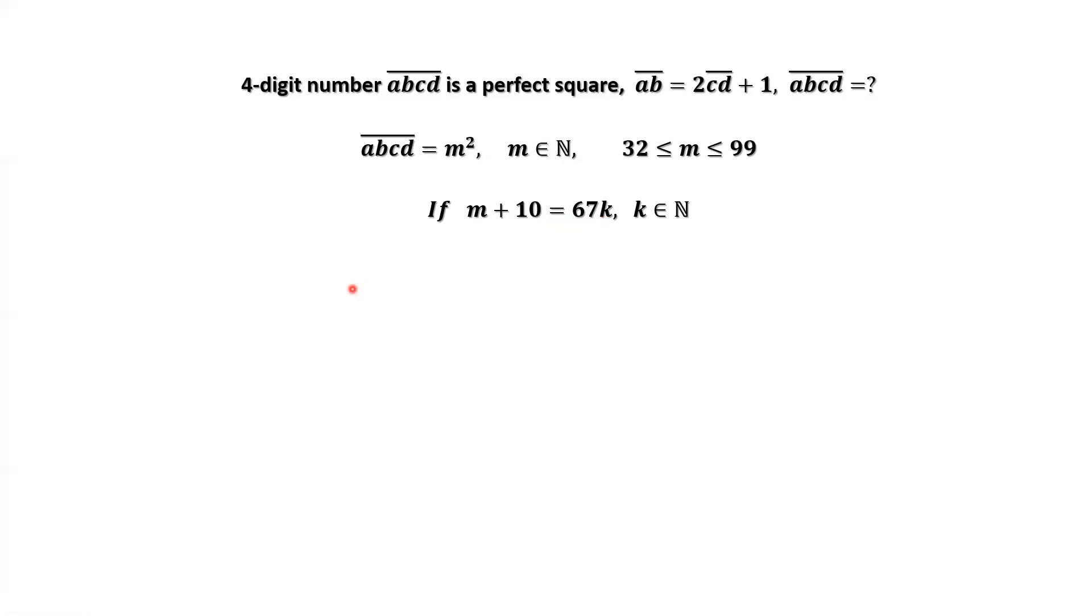Consider M plus 10 equals 67 times K. From the result we derived before, M is between 32 and 99. This implies M plus 10 equals 67. This means K is 1. K cannot be 0. K cannot be 2. So K must be 1. This implies M equals 57.